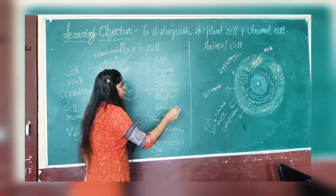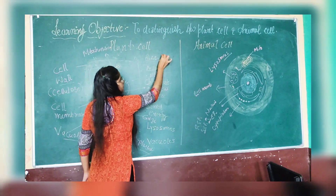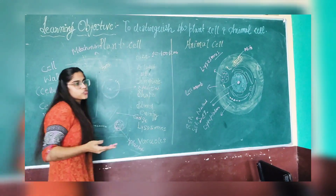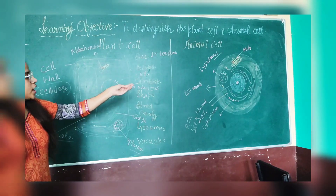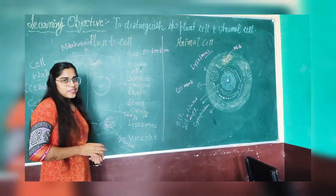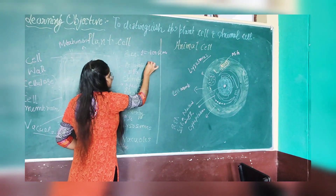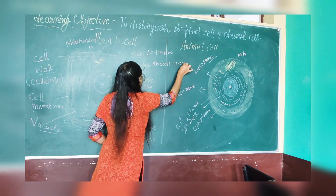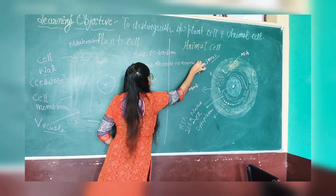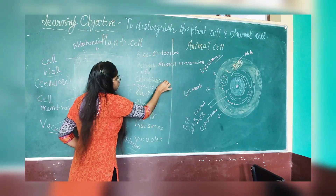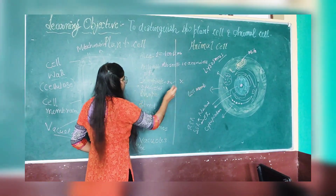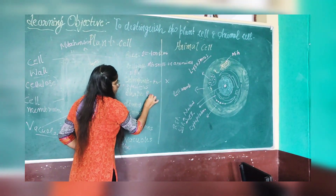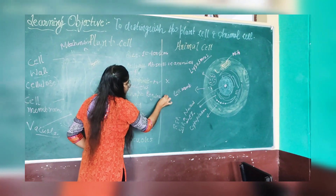Now let's differentiate the two cells. First, the size of the plant cell is about 10 to 100 micrometers, which is quite larger than that of the animal cell. The cell wall is absent in animal cells but present in plant cells. Plastids are present in plant cells and absent in animal cells. The shape of the plant cell is generally regular, but the shape of the animal cell is generally irregular.